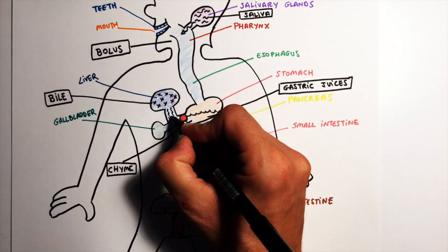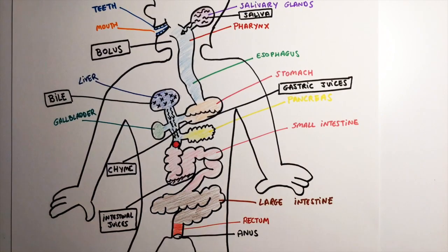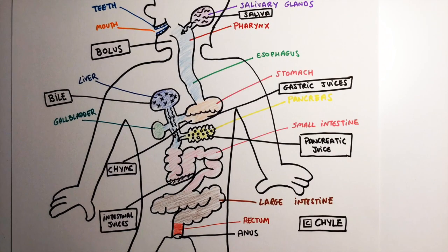The chyme travels to the small intestine, which produces intestinal juices. These juices combine with bile produced in the liver and pancreatic juice produced in the pancreas. The chyme turns into a milky liquid called chyle.